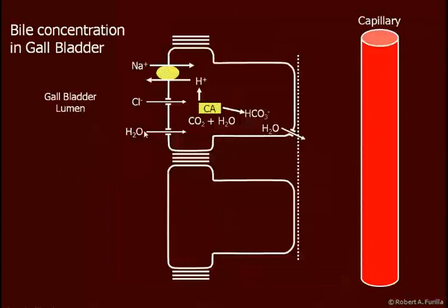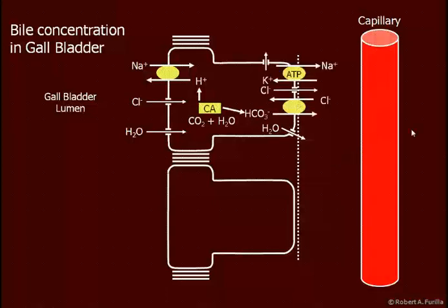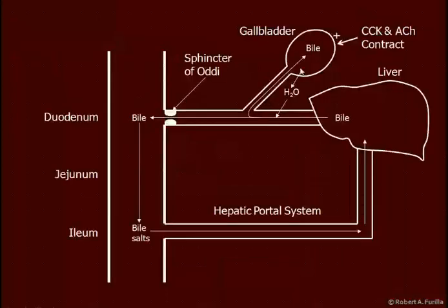In the gallbladder, we remove sodium, chloride, and water. Water is then moved back out into the capillaries. In the gallbladder, we want to concentrate the bile by removing sodium, chloride, and water. Water follows osmotically, then simply leaves through aquaporins on the basal side and is picked back up by capillaries. Chloride is also exchanged for bicarbonate, and chloride just simply leaks back out again. CO2 and water generate hydrogen ions and bicarbonate. The hydrogen ions are used to move sodium inward, and the bicarbonate is used to move chloride inward. So the bile is being concentrated and water is moving out.